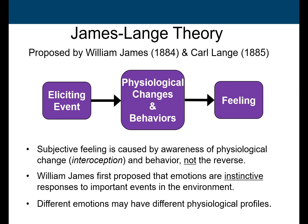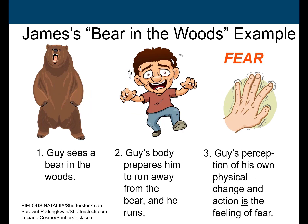William James first proposed that emotions are instinctive responses to important events in the environment, and he argued that different emotions may have different physiological profiles. According to James, if you're walking in the woods and you see a bear, your body prepares you to run away, and then you begin to run. James argued that the perception of your own physiological change and action is the feeling of fear.